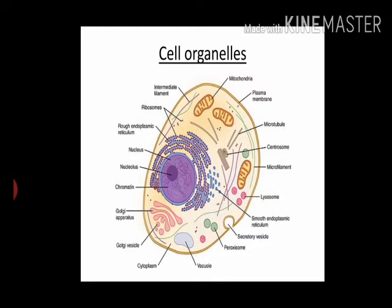Every cell has a membrane around it to keep its own content separate from the external environment. I explained this when discussing the plasma membrane — why it is so important to protect a cell from the external environment. Large and complex cells, including cells from multicellular organisms, need a lot of chemical activities to support their complicated structure and function.